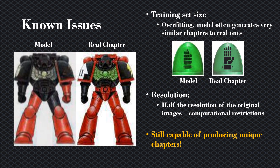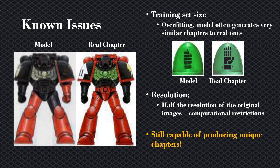There are a few issues with the model. Because the training set size is so small, the model is overfitting — it sees the training data too much, so it learns to generate chapters that are actually very similar to real ones, which is something we don't really want; we want it to be creative. You can see that this green shoulder pad with the hand that the model makes is really similar — although not identical — to a real chapter. The resolution of my generated ones is about half the resolution of the original images, because my computer is just not good enough to deal with images that big. These models require really big supercomputers to run at scale. They have large memory requirements for training.